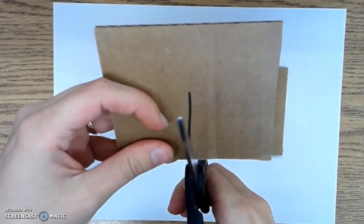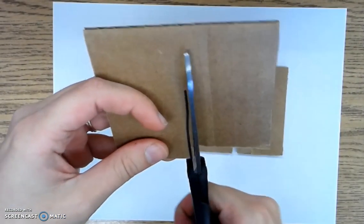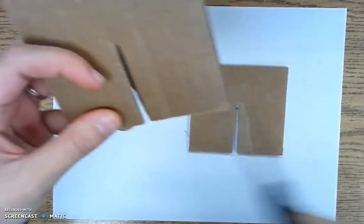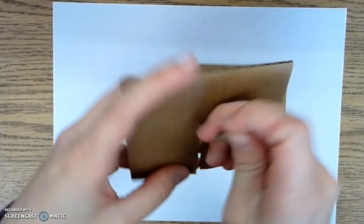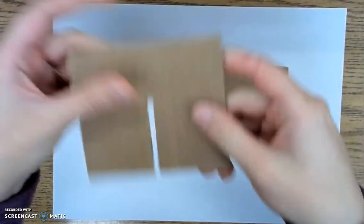So now I'm going to do it to the other side. I'm just going to cut on both sides of the black line and then rip that off.